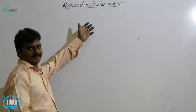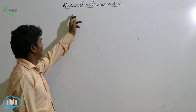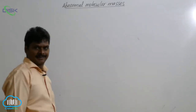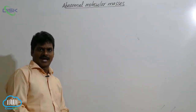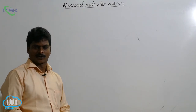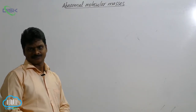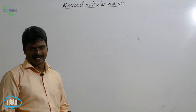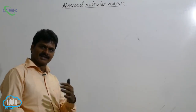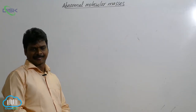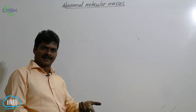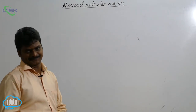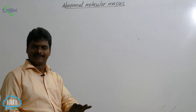The last topic in this chapter on solutions is abnormal molecular masses. In the previous class, we discussed colligative properties: relative lowering of vapor pressure (RLVP), elevation in the boiling point of solvent delta Tb, depression in the freezing point of solvent delta Tf, and osmotic pressure pi.